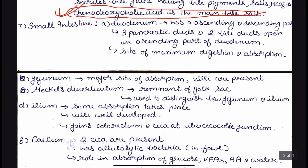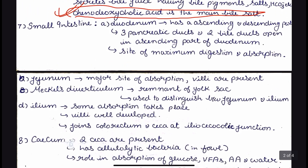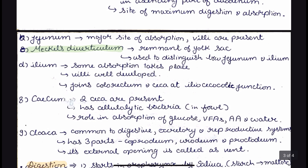Then we have the small intestine and large intestine. The small intestine has three parts just like mammals: duodenum, jejunum, and ileum. The duodenum has two parts — ascending and descending duodenum. Between the jejunum and ileum, there is a structure called Meckel's diverticulum. Birds have a yolk sac, and as the chick grows, the yolk sac will regress. The remnant of the yolk sac left in the adult bird is called Meckel's diverticulum, and it is present at the junction of jejunum and ileum. You can differentiate jejunum from ileum by looking at the Meckel's diverticulum.